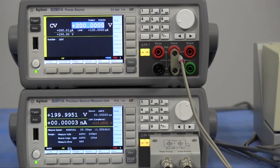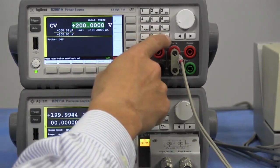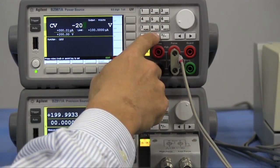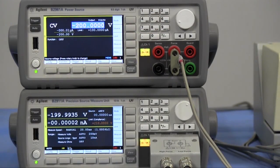You can see the difference between the voltage source and measured voltage is very small. I'll change the force value to minus 200 volts. You can see that the difference between the force voltage and measured voltage is very small.